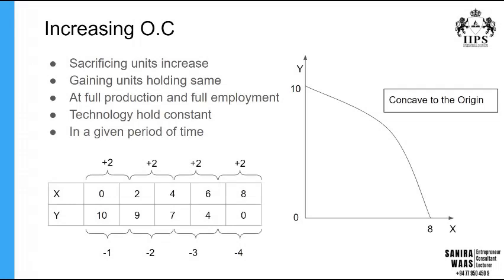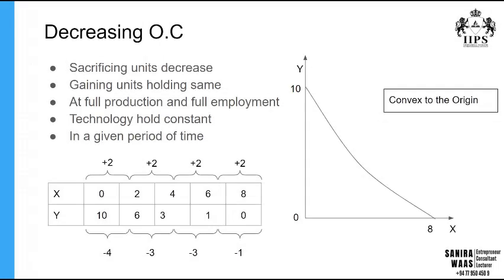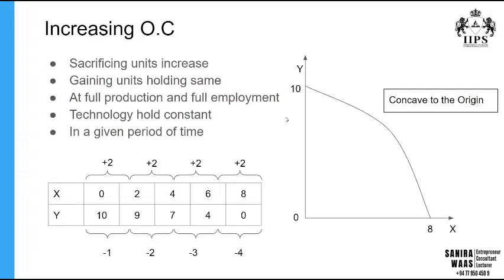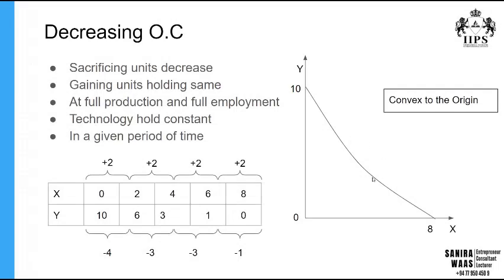The shape of increasing opportunity cost is a curve concave to the origin. On the other side, decreasing opportunity cost shows a curve convex to the origin. In decreasing opportunity cost, the sacrificing units gradually decrease over time while the gaining units stay at the same level — you sacrifice much more at first, and as you move along you sacrifice only a little. The same three assumptions apply: full production, full employment, and constant technology, for a given period of time.